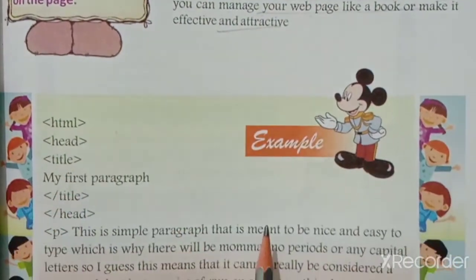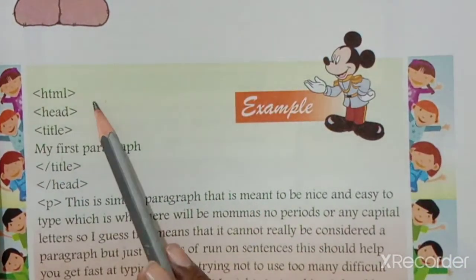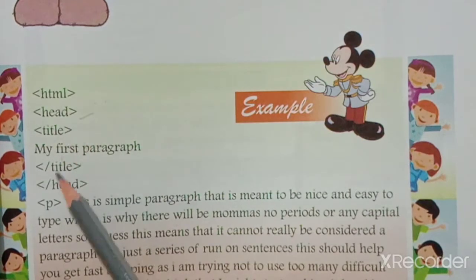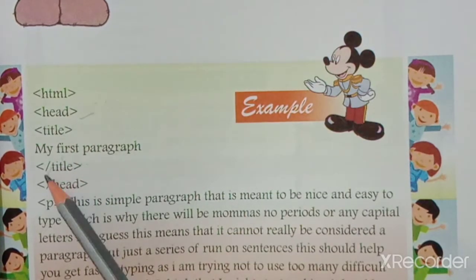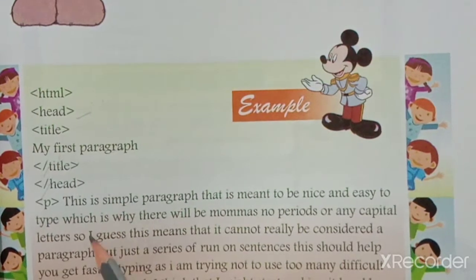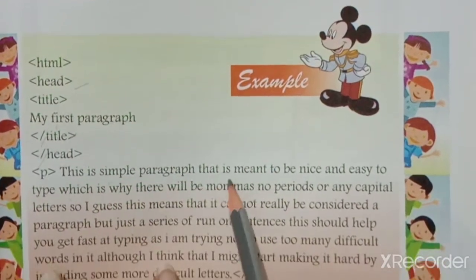For example, the paragraph tag code: HTML, heading, title, 'My First Paragraph', title finish, heading finish. Then a simple paragraph of text is placed inside the paragraph tags.